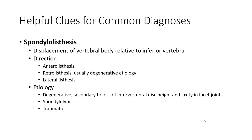Spondylolisthesis refers to displacement of one vertebral body relative to the inferior vertebral body. Types include anterolisthesis, retrolisthesis, degenerative — usually degenerative etiology — and lateral listhesis, which is degenerative, secondary to loss of intervertebral body height and laxity in the facet joints.